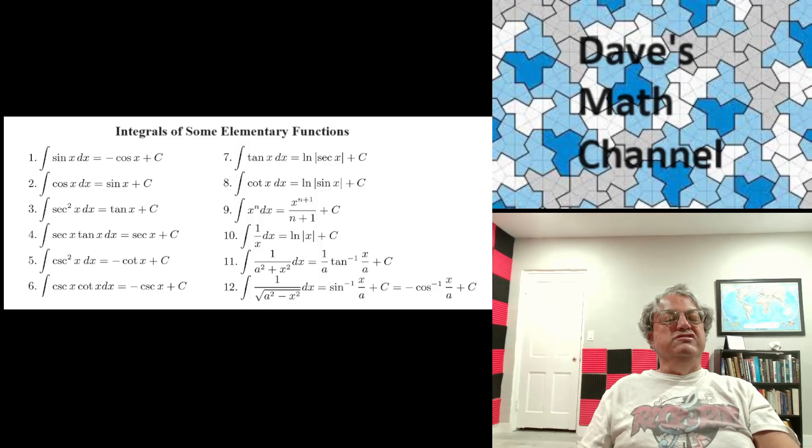The only two it doesn't give immediately are actually the last two. It'll give us these formulas for A equals 1. It turns out that for general A, here A is supposed to be an arbitrary positive real number, you can just use substitution to get these equations.